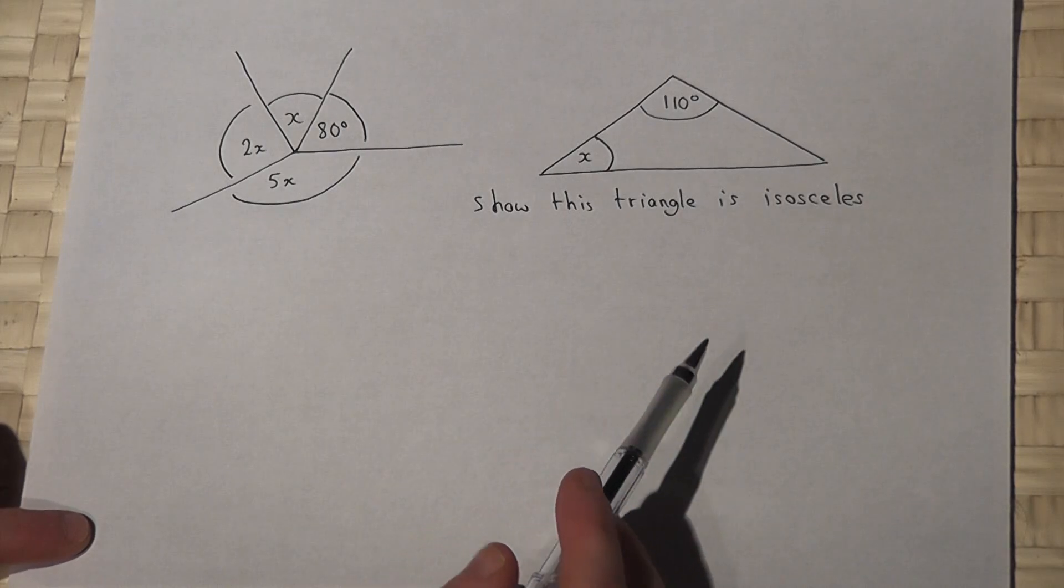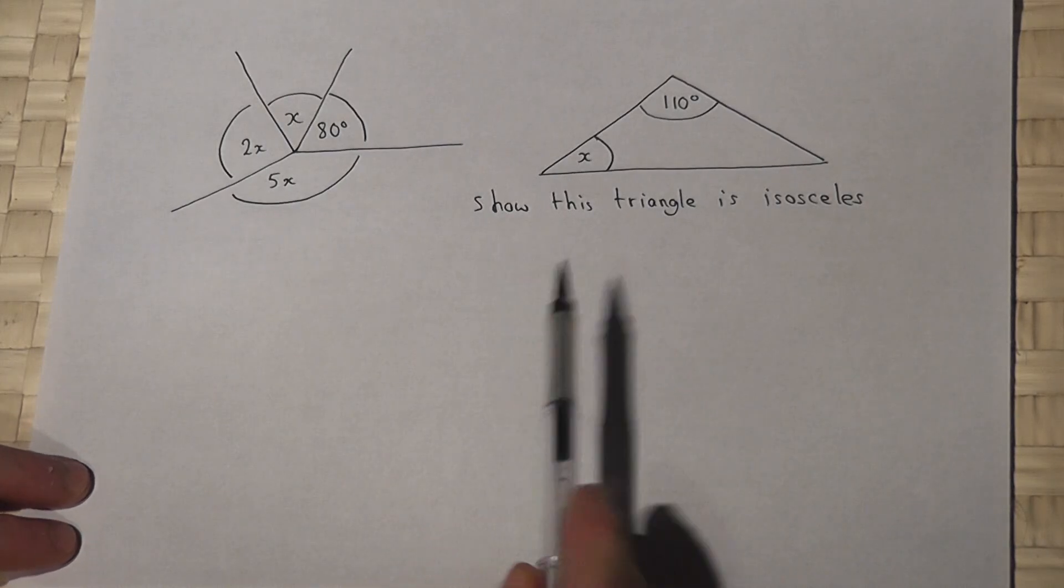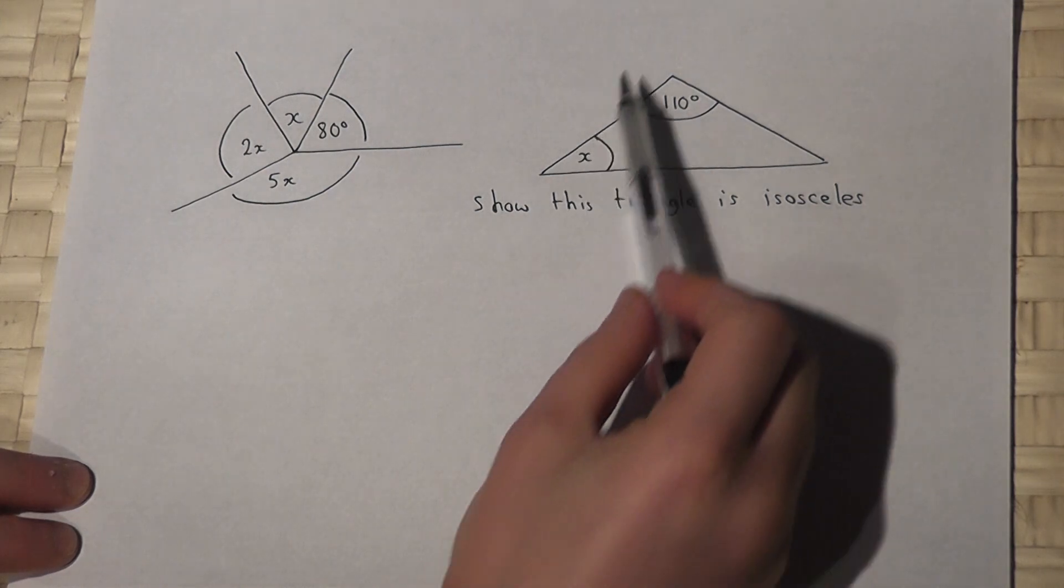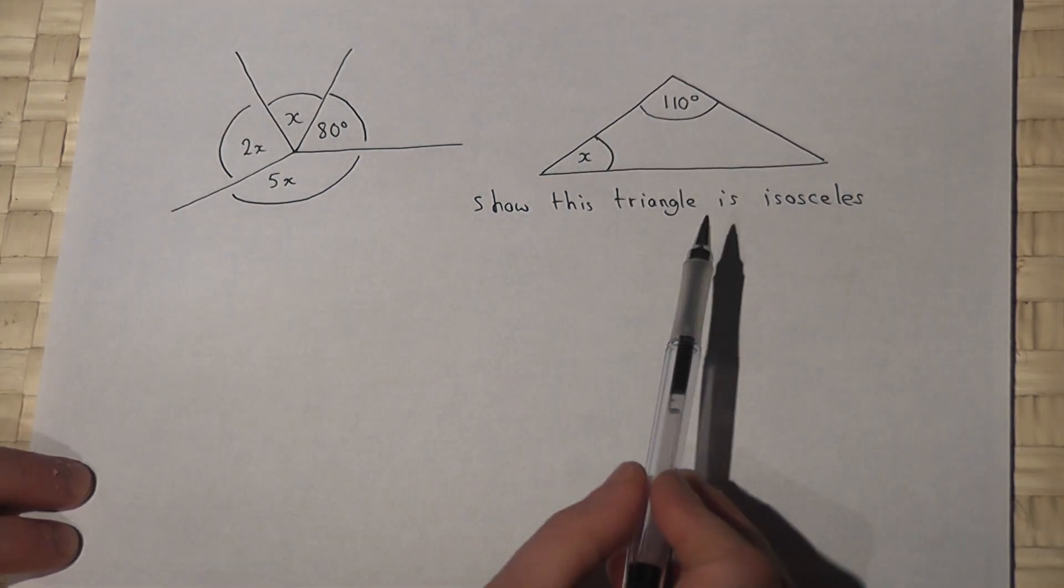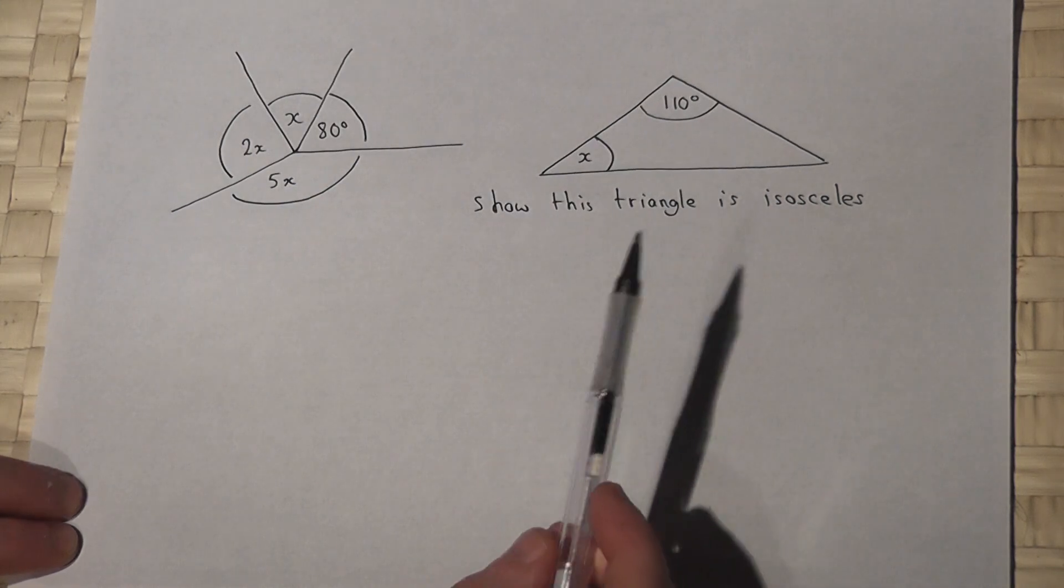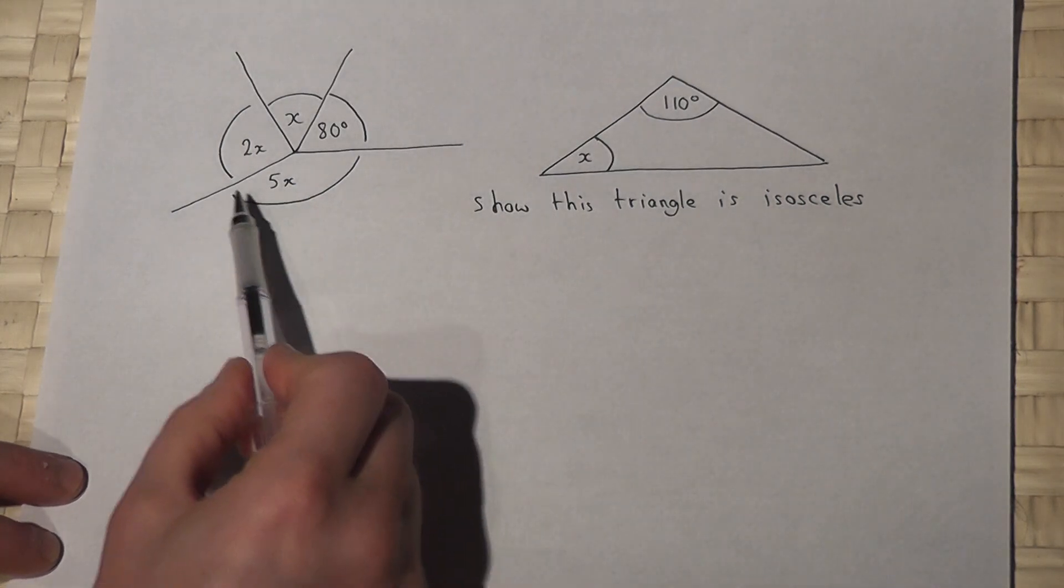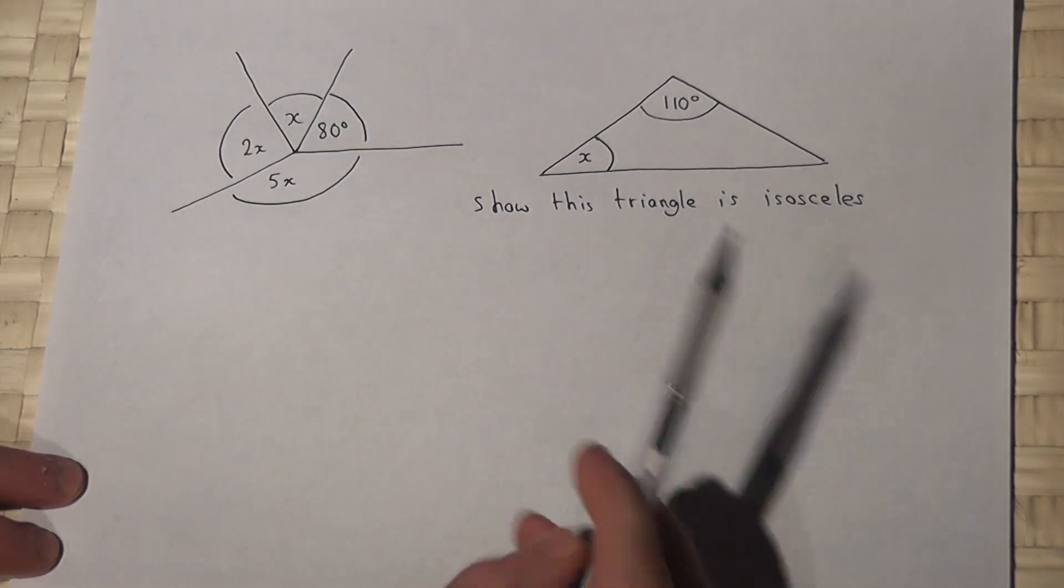This is a nice little problem involving algebra and angles. We're given a triangle and we only know one angle, and we're asked to show it is isosceles. Now the way to do this is to find X using the first diagram.